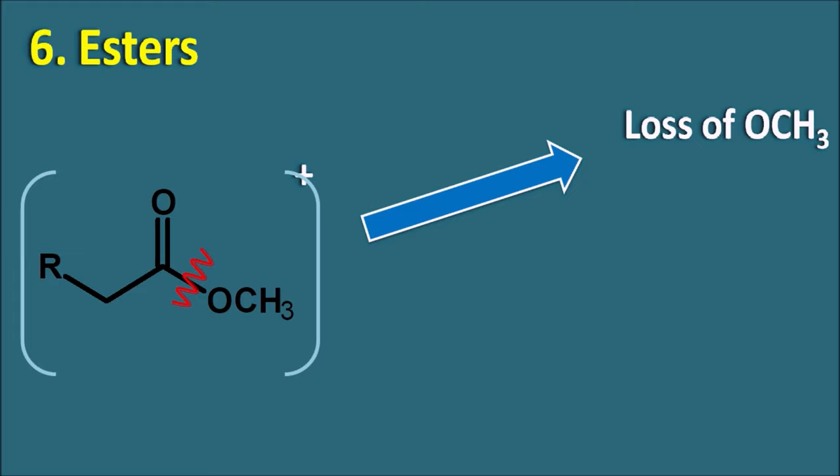Next one is amides. Amides can undergo alpha cleavage to produce a fragment ion CONH2. The m/z value: NH2 is 14+2=16; plus one oxygen (16) gives 32; plus one carbon (12) gives 44. So we observe a peak at 44 indicating formation of the CONH2 group. Amides can also show McLafferty rearrangement at m/z 59.